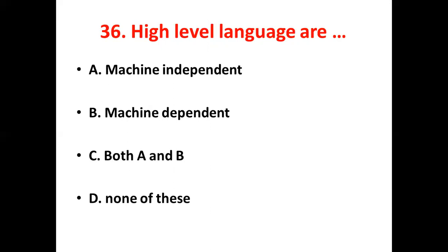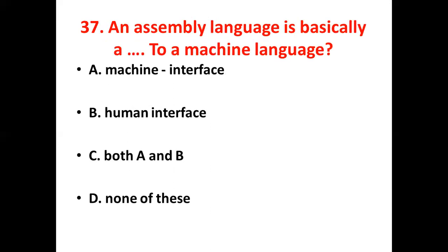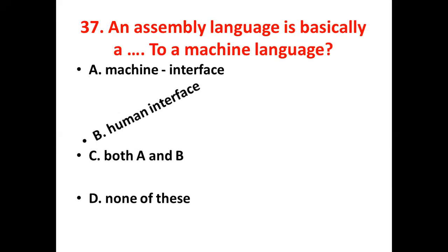High-level language is machine independent. And assembly language is basically a dash interface to machine language. Option A, Machine interface. Option B, Human interface. Option C, Both A and B. Option D, None of these. The answer is Option B, Human interface.